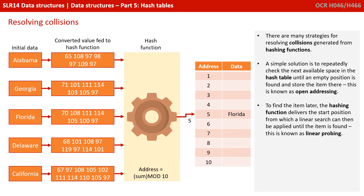There are many strategies for resolving collisions generated from hashing functions. A simple solution is to repeatedly check the next available space in the hash table until an empty position is found and store the item there. This is known as open addressing. To find the item later, the hashing function delivers the start position from which a linear search can then be applied until the item is found. This is known as linear probing.